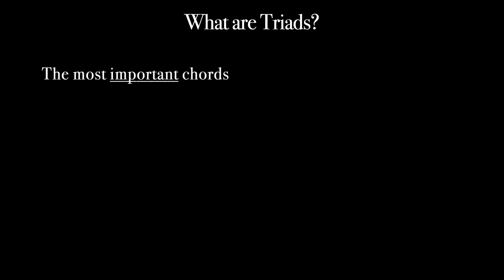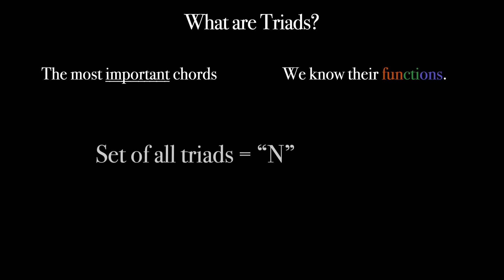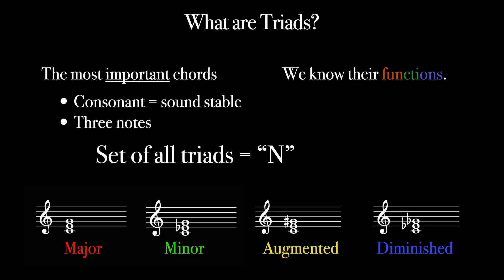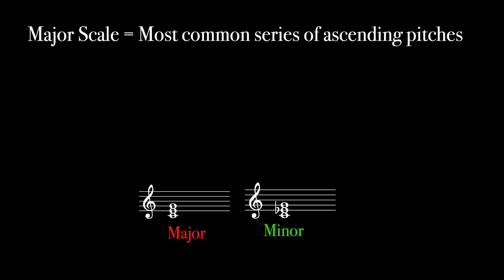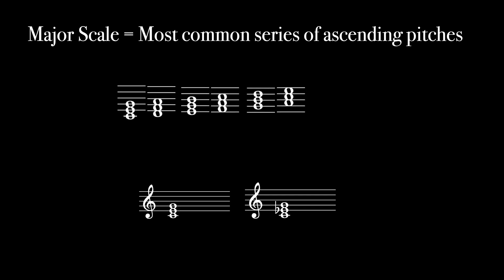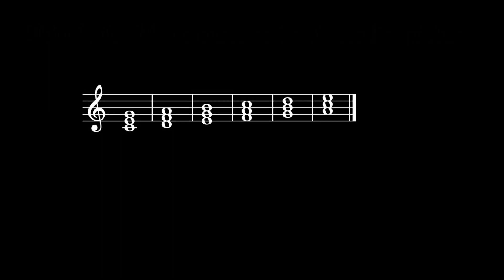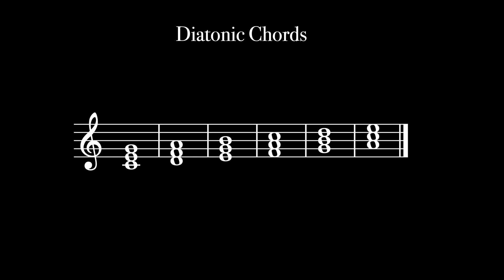The most important chords are triads. They're important because we know their musical functions. We'll call triads Nice Chords, with a capital N, because they play nice. Triads are consonant, three-note chords. There are four types of triads, but we'll focus on major and minor for now. We'll arrange these chords into a major scale, the most common series of ascending pitches. When triads are arranged in a major scale, we call them diatonic chords, and refer to the individual chords based on their degree. For example, one, four, and five are major diatonic triads. Two, three, and six are minor diatonic triads.